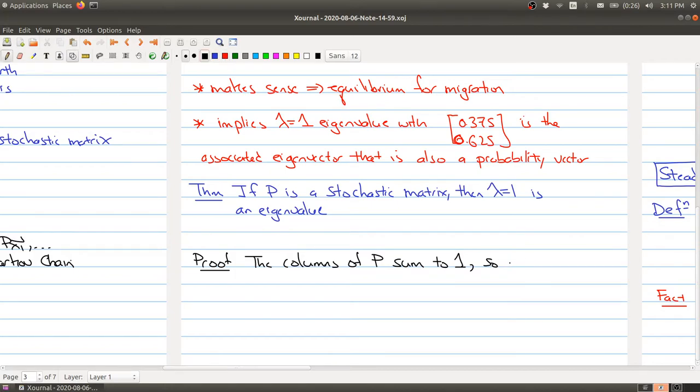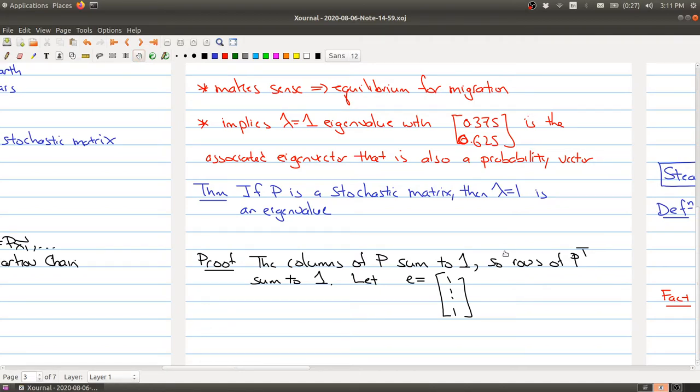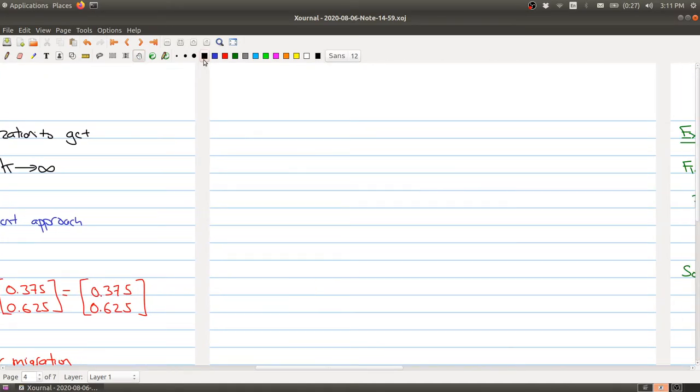That means the rows of P transpose sum to one, because when we take the transpose we're switching rows and columns around. Now we're going to let e be the vector of all ones. Then P^T times the vector e is going to be equal to e. It may not be clear why this is true, but let's do an example in our proof to see this.